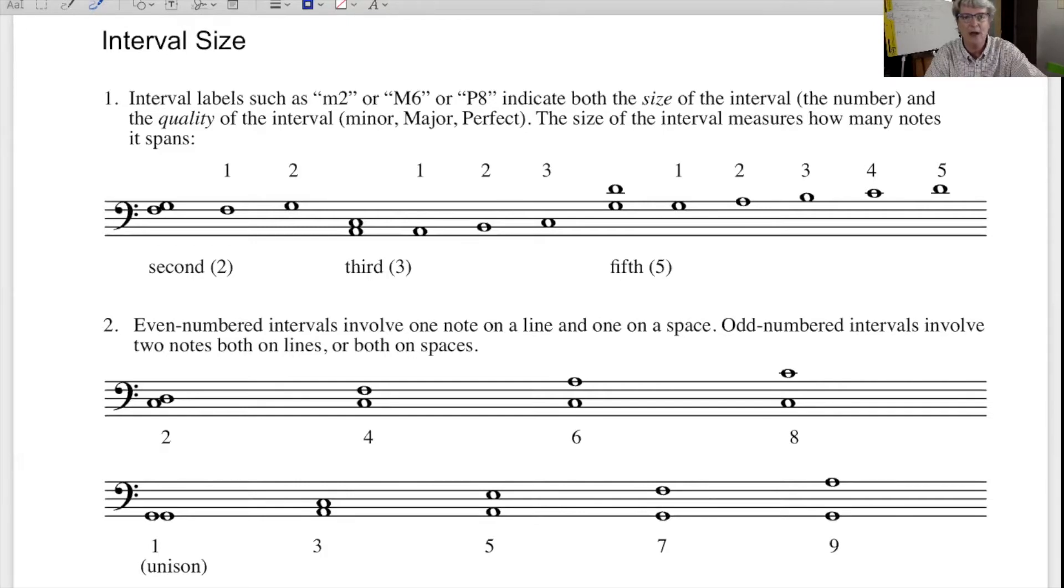And to figure out the interval size, you literally just have to count. So for instance, over here, we have an interval with an F and a G. So we count one on the F, two on the G. It's a second. We always count one rather than zero. And so we're counting the total number of lines and spaces that that interval spans.